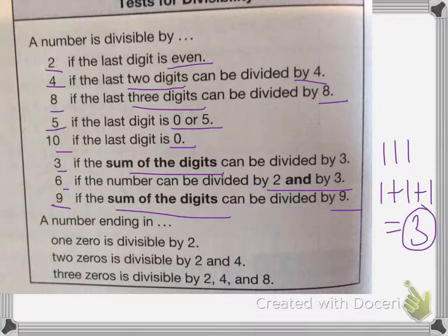A number with 1 zero is divisible by 2. 2 zeros is by 2 and 4, and 3 zeros by 2, 4, and 8.